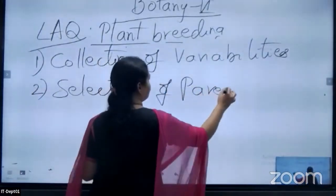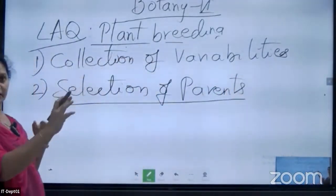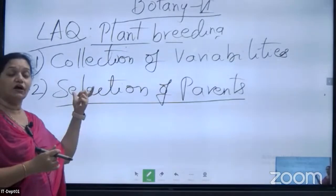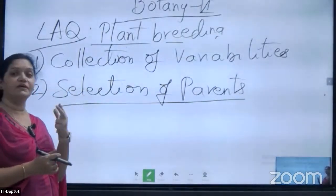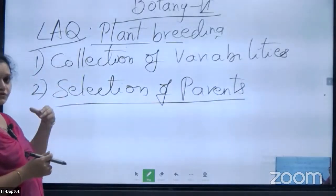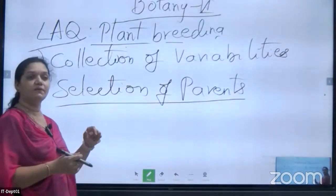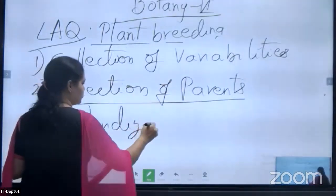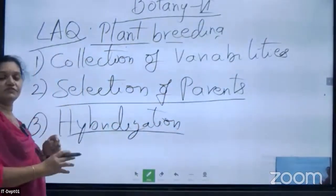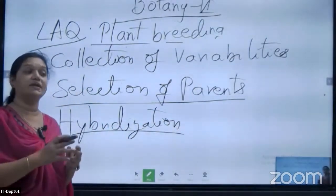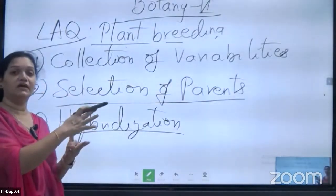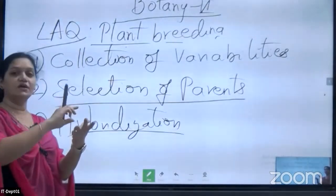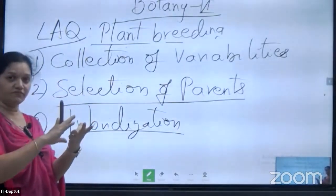The second step is selection of parents. From the germplasm collection, we select parents suitable for hybridization which have all our desired characters. The parents may be two or more than two. The third step is hybridization — artificial hybridization by making one parent completely female through emasculation. For single solid flowers, emasculation is done by removal of stamens with sterilized forceps.